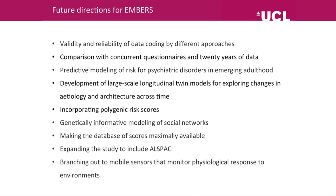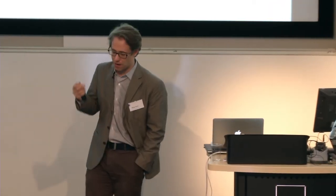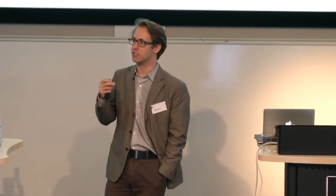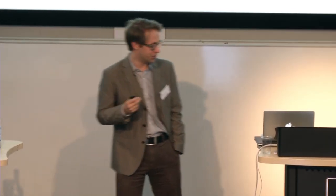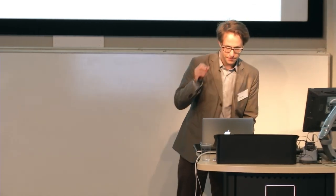There's a lot of work to do now. The first thing is to validate the data and compare it with 20 years of data we already have in the Twins Early Development Study. The second is to develop large-scale longitudinal twin models that can handle 3 million tweets and more. We also want to incorporate particular measured genetic variants through polygenic risk scores into this type of genetic model. Thank you very much.